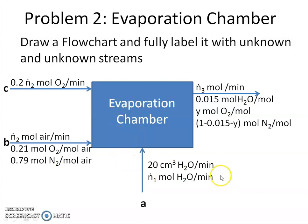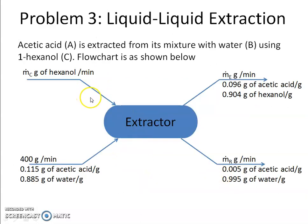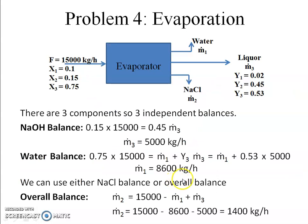Similarly, in another problem I had three unknowns — ṁ_C, ṁ_E, and ṁ_R — and three components, giving three independent balances on water, acetic acid, and hexanol. The same was the case in problem 4: three components and three independent balances. You can pause this video on each slide to verify the pattern.